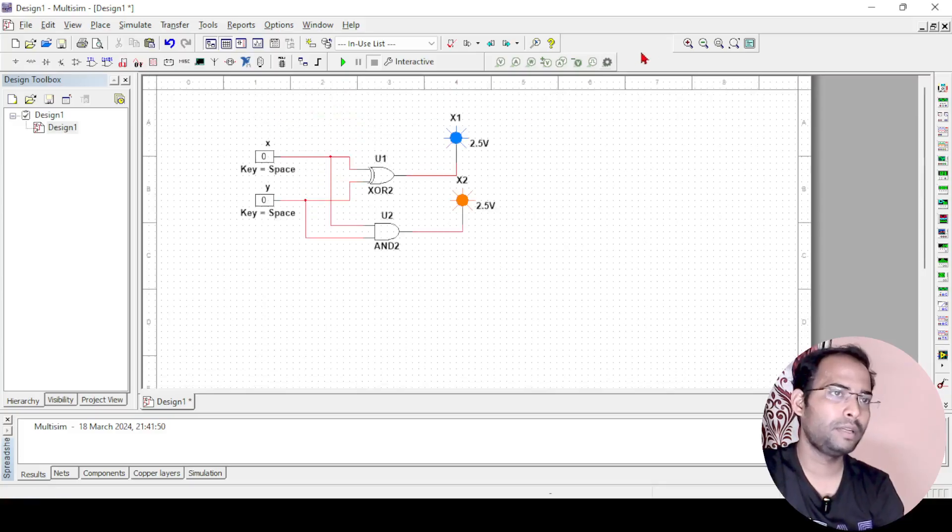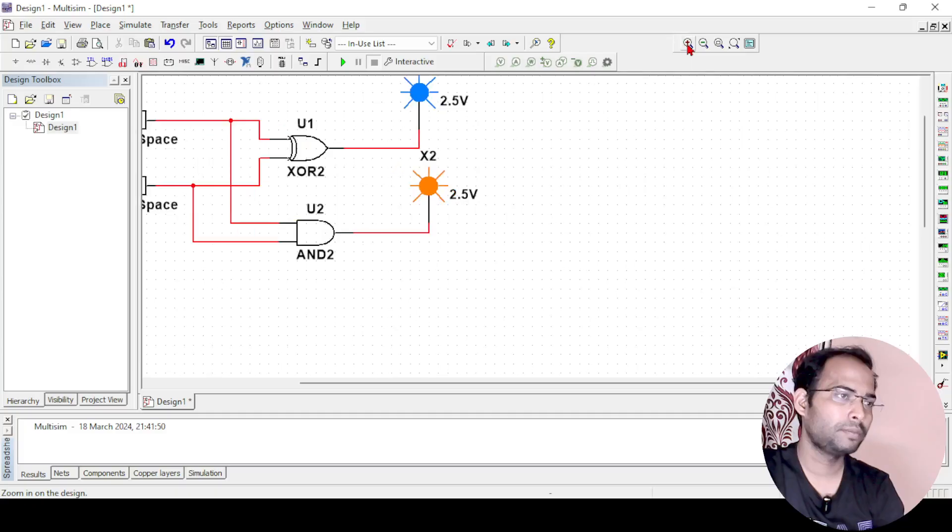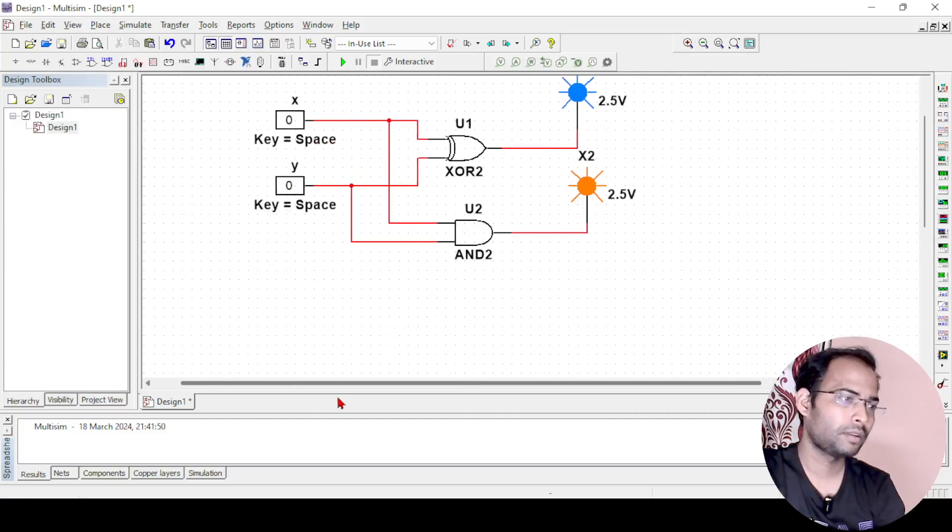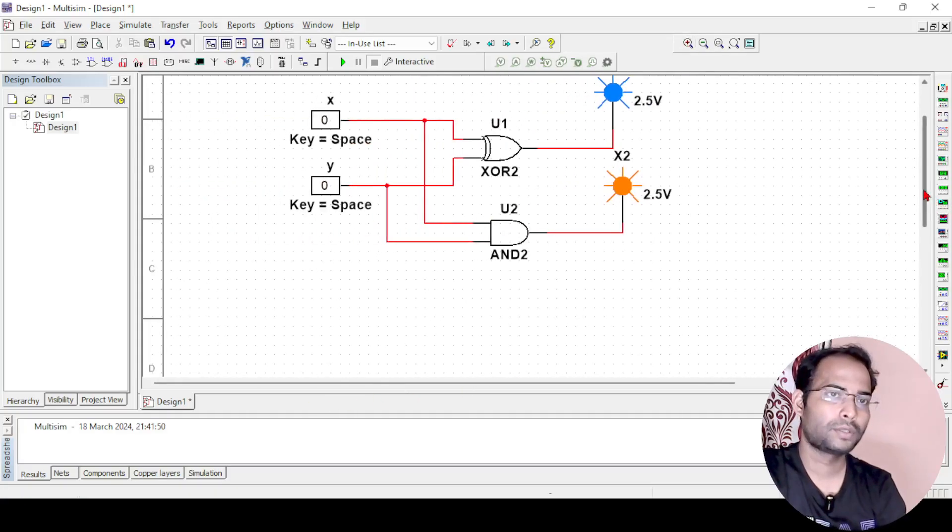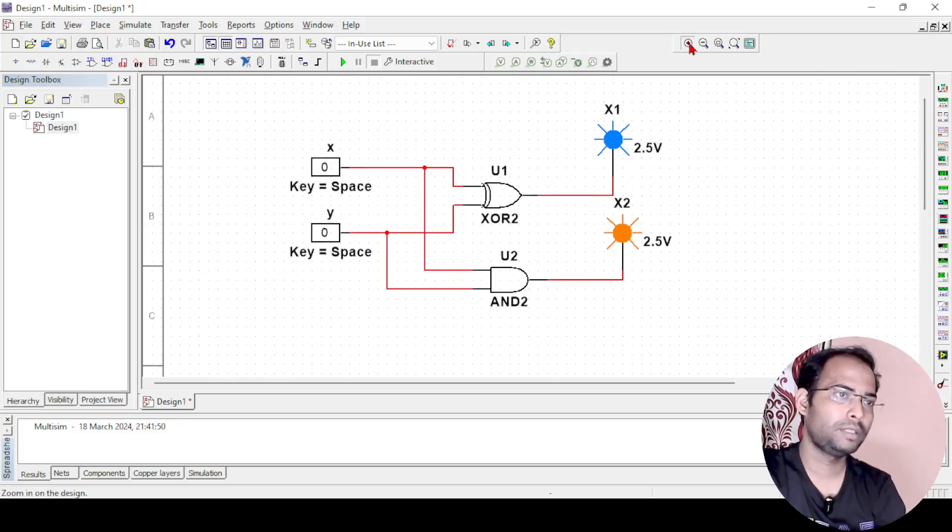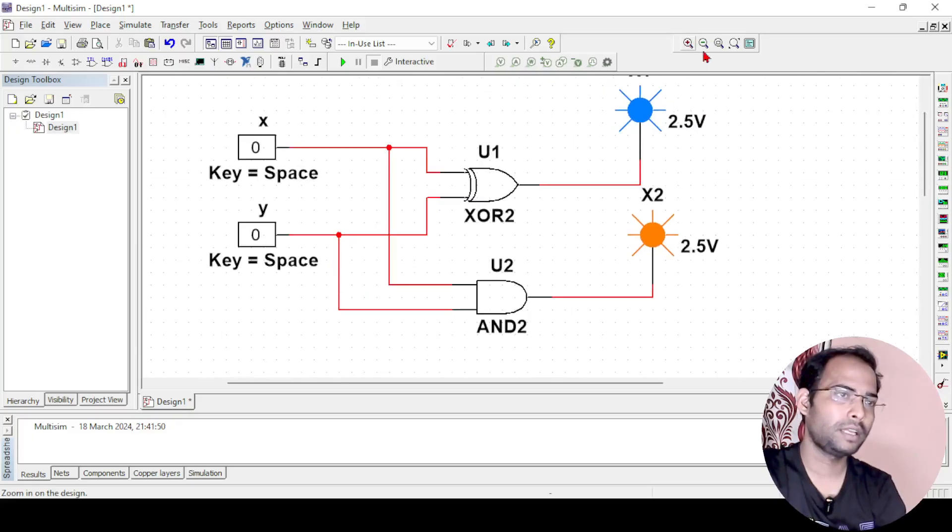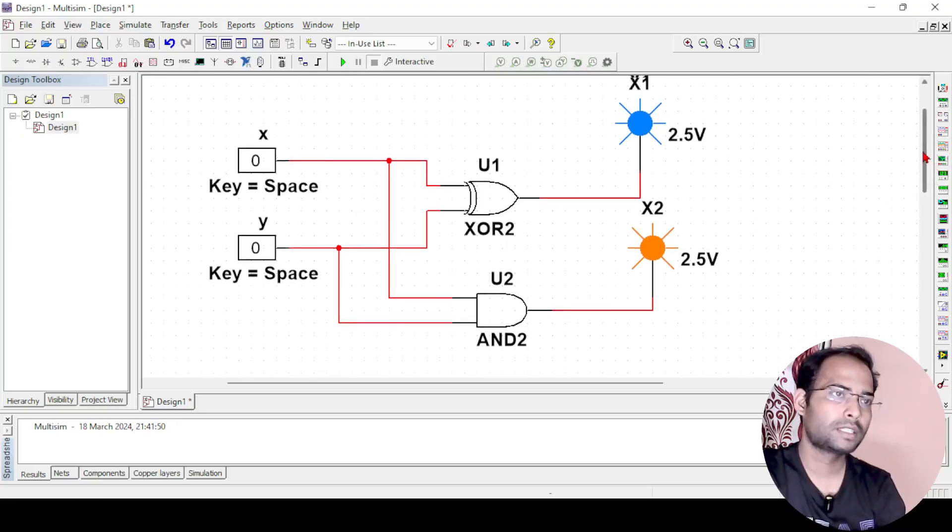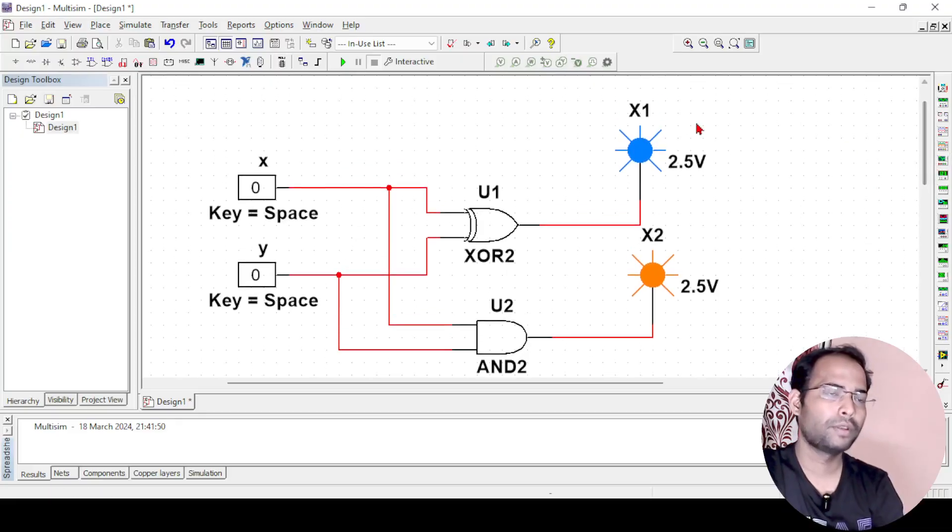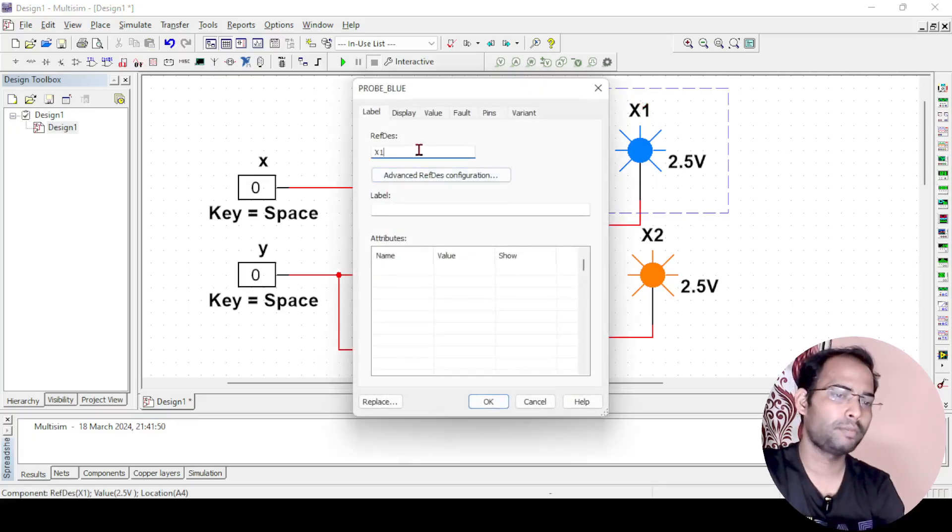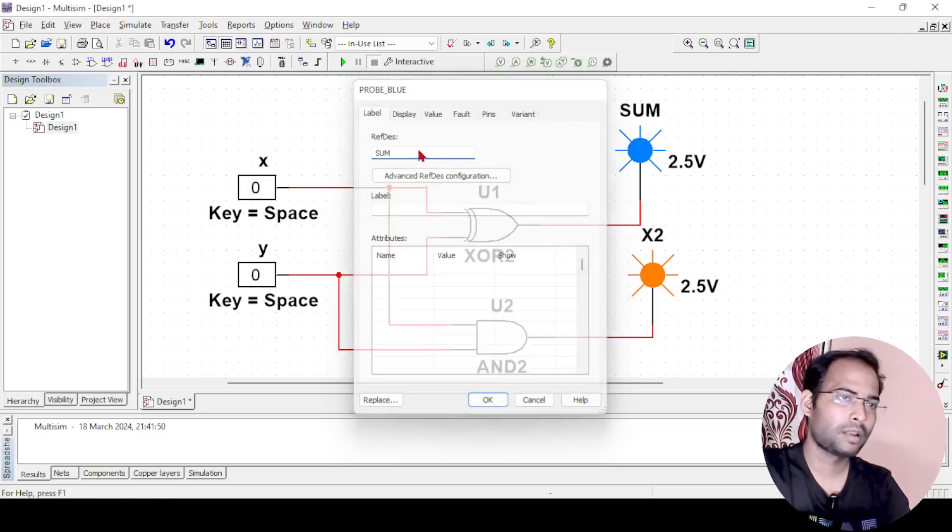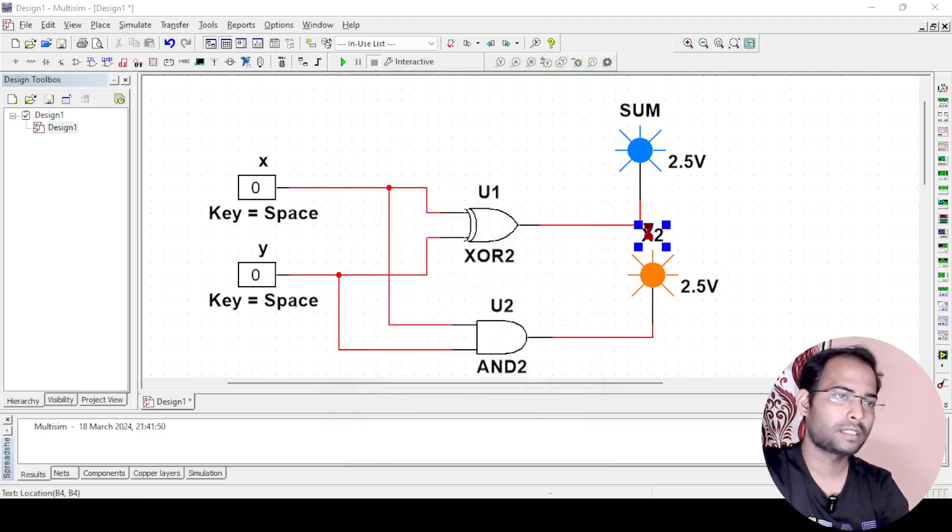So if I zoom in a little bit, it will be better visible. So I think now it is better visible here. If you want you can take a snapshot of this and save it for your future reference. So this also you can change, the label also you can change here, let me write here sum and this one I will write as carry.